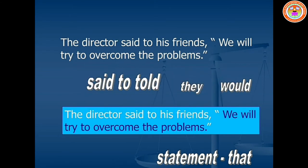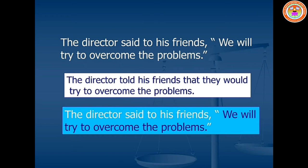Number two: The director said to his friends, 'We will try to overcome the problems.' Step one: Change 'said to' into 'told.' Step two: Remove the inverted commas and add the conjunction 'that' because it is also a statement. Step three: The pronoun 'we' refers to the director and his friends, so 'we' should be changed into 'they.' Step four: 'Will' should be changed into 'would.' Answer: The director told his friends that they would try to overcome the problems.